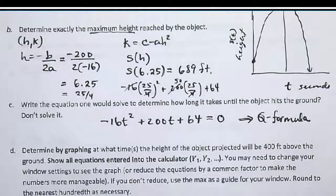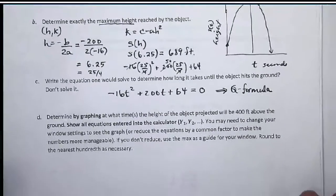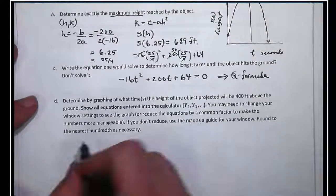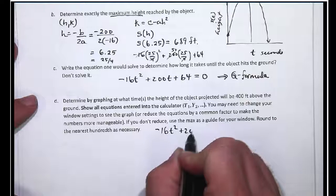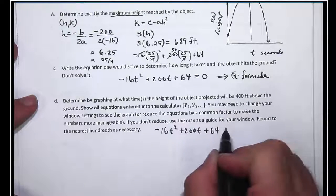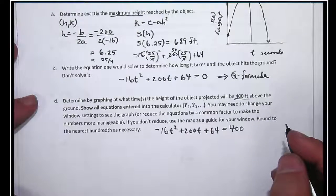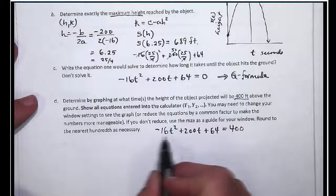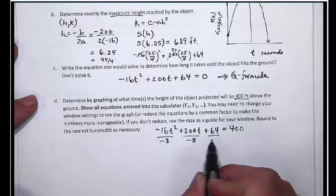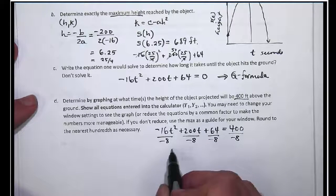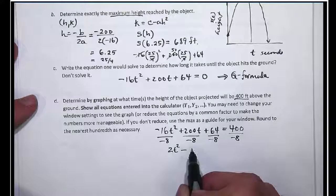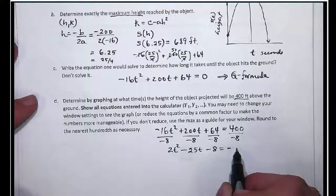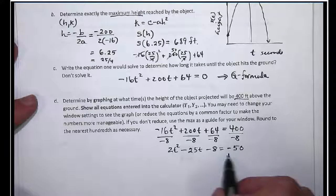The last part: determine by graphing at what times the height of the object projected will be 400 feet above the ground. So I'm looking for when negative 16t² plus 200t plus 64, that's my s(t), equals 400. We can reduce this equation by dividing everything by negative 8 just to make the numbers smaller. That would give me 2t² minus 25t minus 8 equals negative 50.